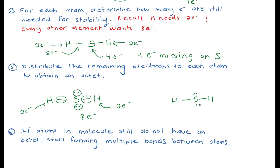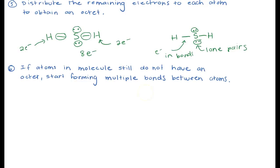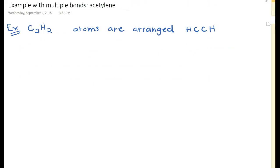Now we have two different types of electrons: electrons that are in bonds, and electrons that are not in bonds. We call these lone pairs. Even though they're not involved in a chemical bond, they will become important later. If the atoms in the molecule still do not have an octet after distributing remaining electrons, we want to start forming multiple bonds between atoms. Let's look at an example of that.